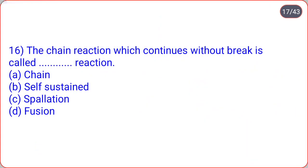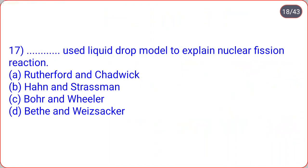The next: the chain reaction which continues without break is called dot-dot reaction. Options are chain, self-sustained, spallation, fusion. Correct option is option B, self-sustained reaction. Also, dot-dot used the liquid drop model to explain nuclear fission reaction. Correct option is option C, that is Bohr and Wheeler.